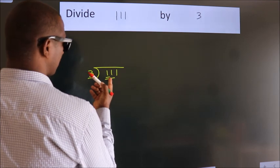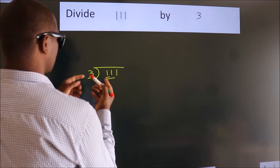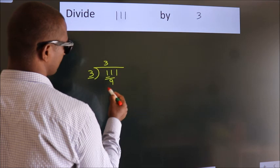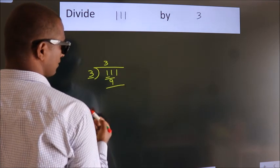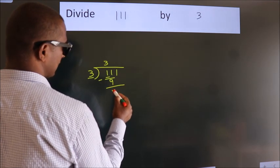A number close to 11 in the 3 table is 3 threes, which is 9. Now we subtract and get 2.